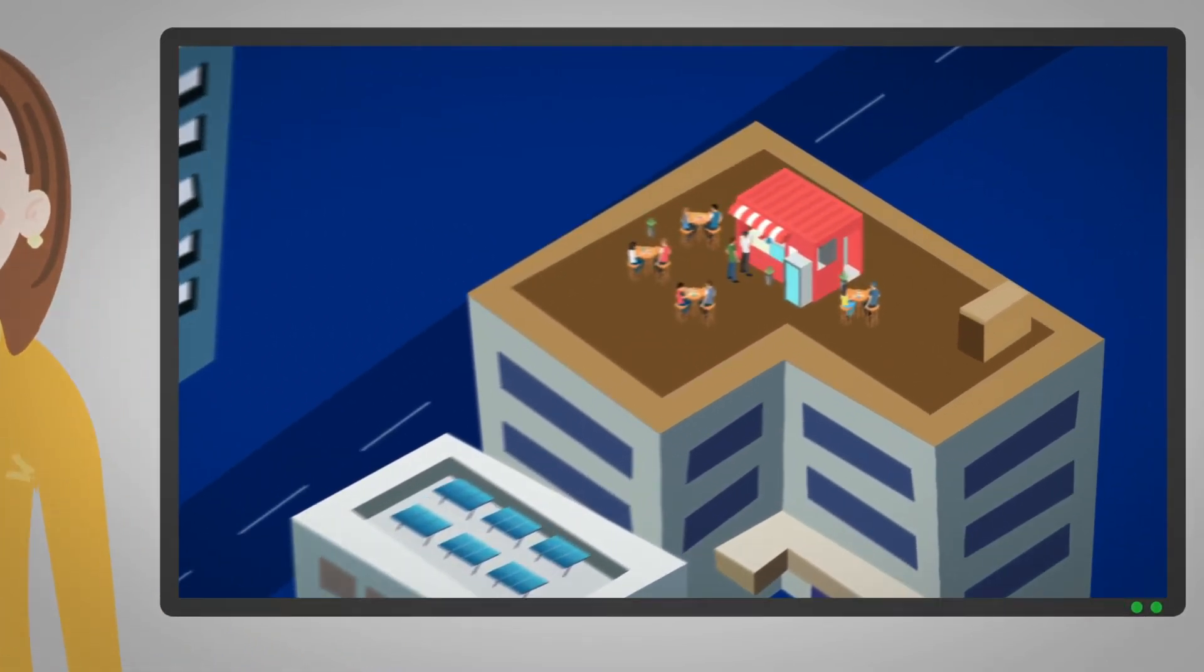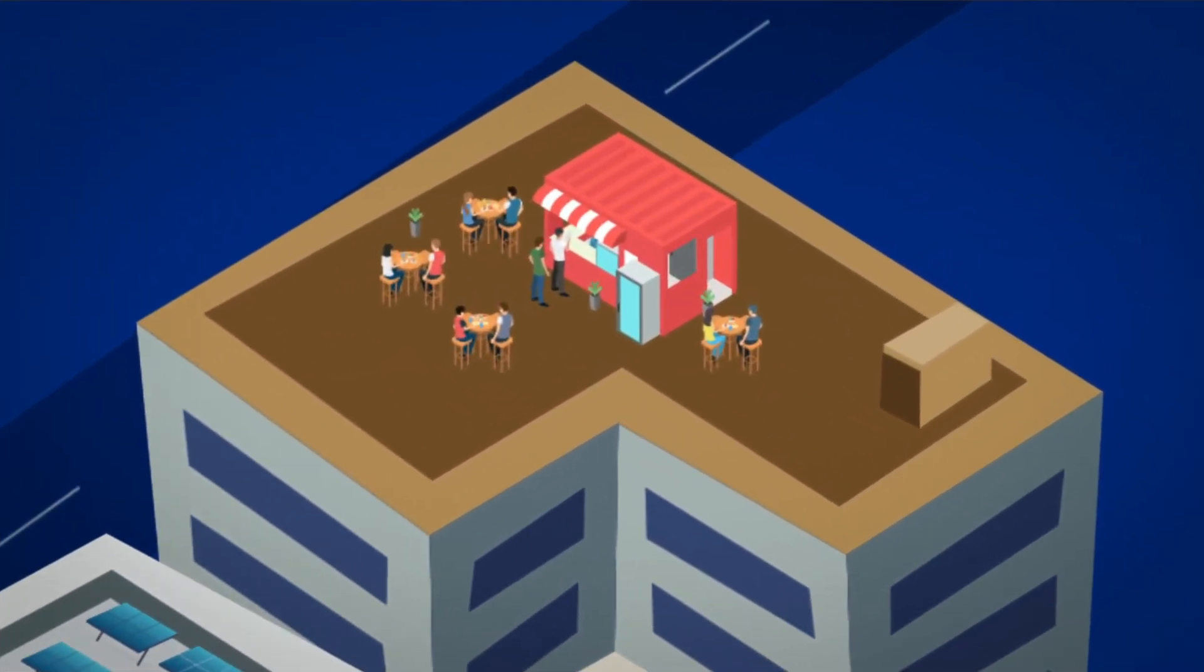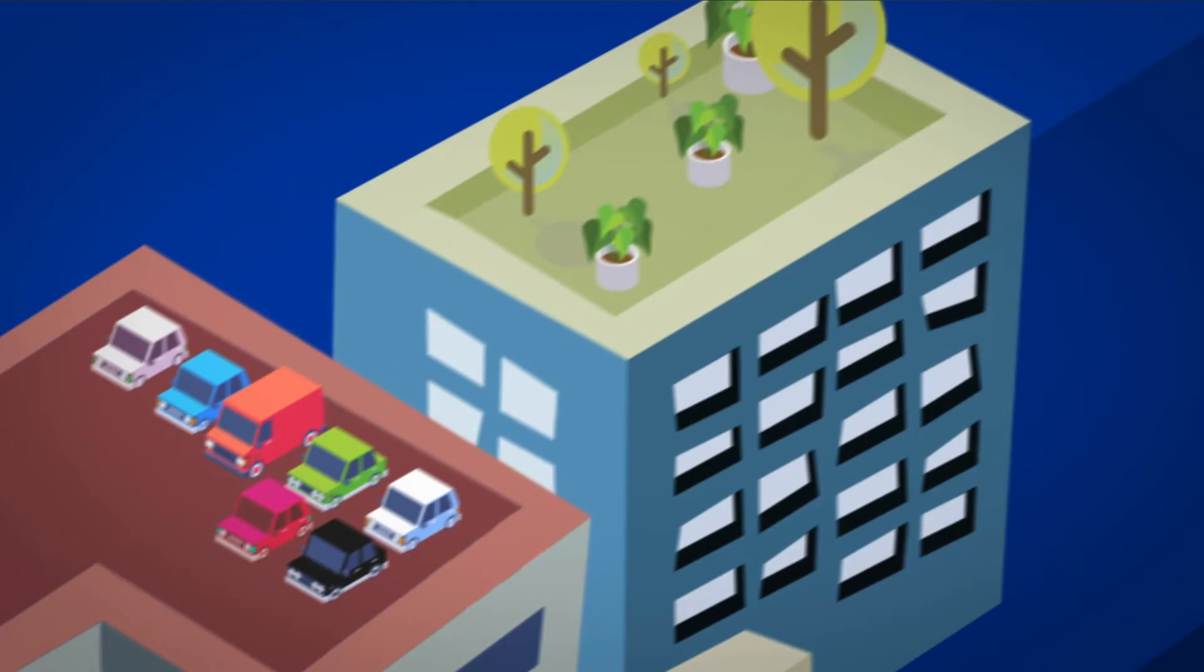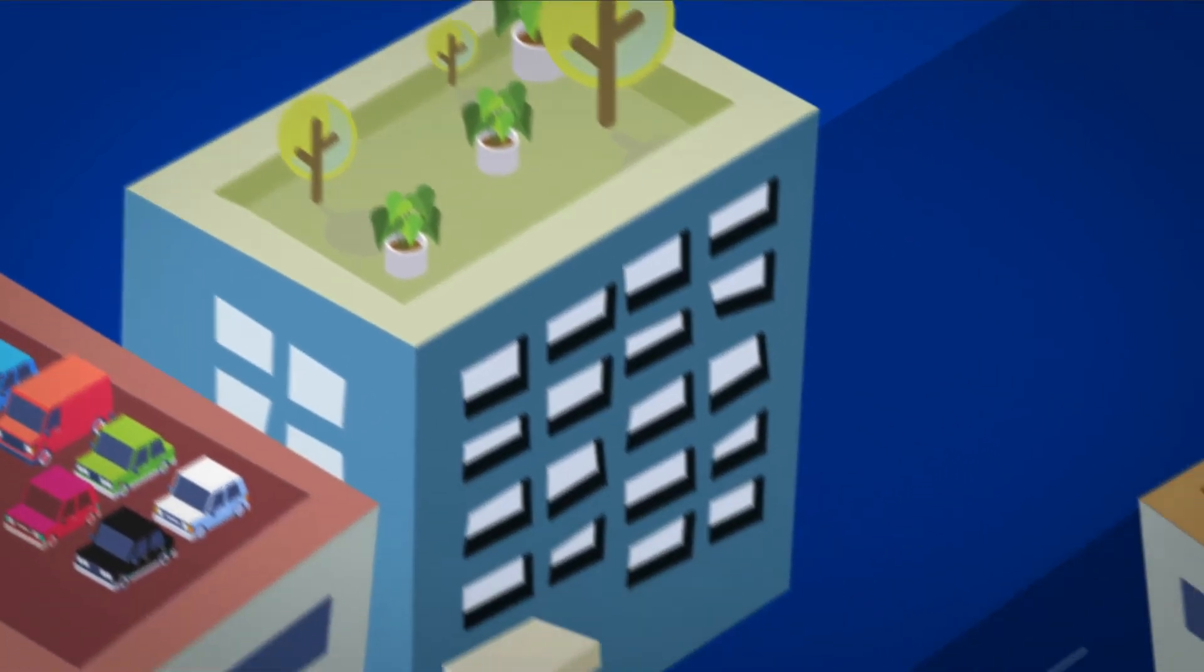For example, a roof could be home to a pedestrian terrace, be used for car parking, incorporate green or blue roof systems, or host useful equipment and machinery.